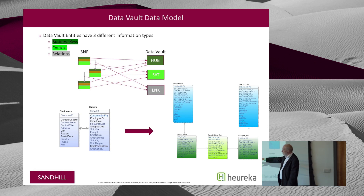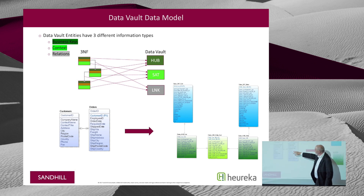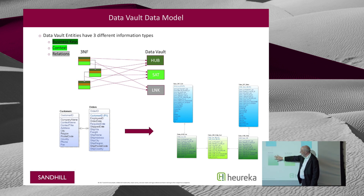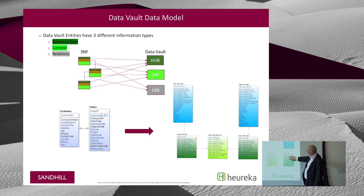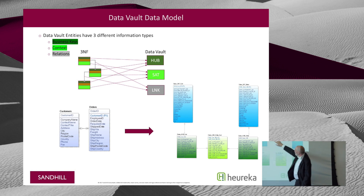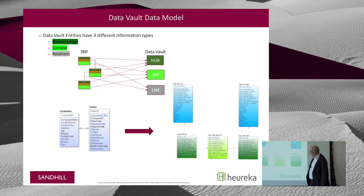Here's an example. We've got two tables — customers and orders — and a relationship between them. The identities of the customers and orders get represented in the hub, so there's a customer hub and an order hub. The context information gets moved into satellite tables, and then the relationship between the two source tables is represented by a link table.